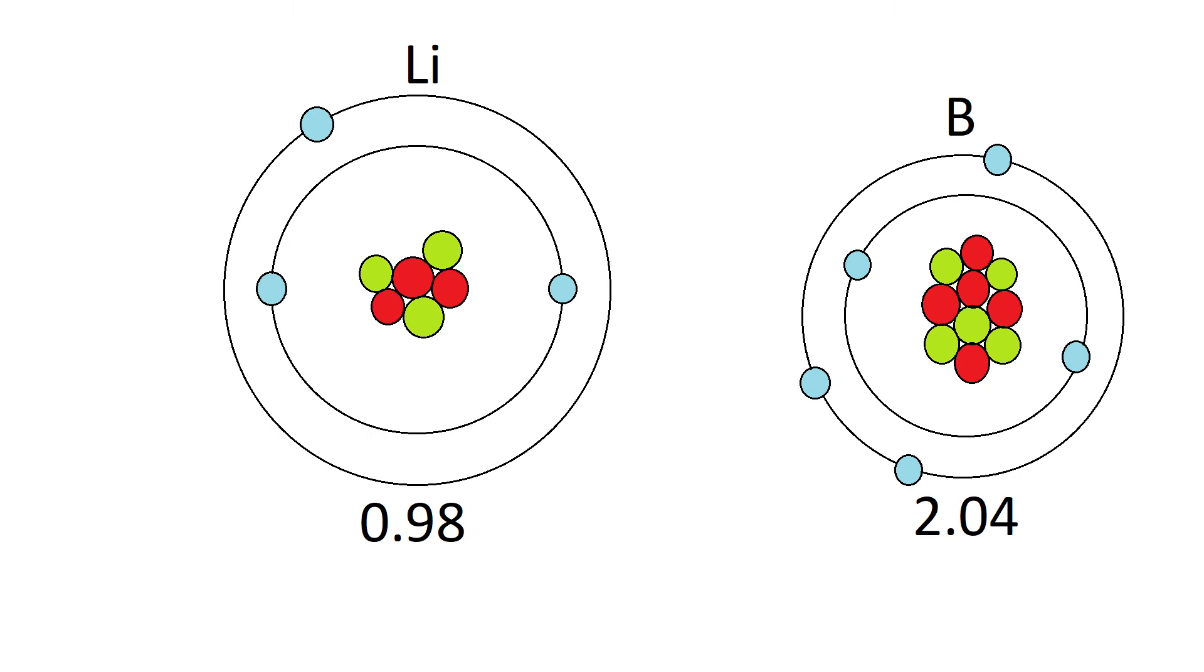The atom to the left is lithium because it has three protons and the atom to the right is boron because it has five protons. When looking at the number listed below the atom that represents its electronegativity, for lithium it's 0.98 and for boron it's 2.04. That means that boron has a high electronegativity and this is seen because boron has more protons and the same energy levels.